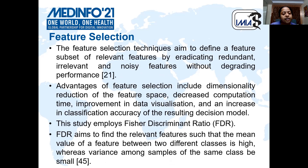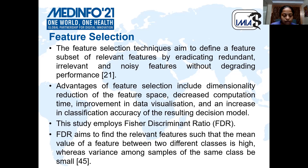After carrying out the feature extraction step, we perform the feature selection step in order to remove redundant or irrelevant features without degrading the performance. In this model, we have used the Fisher Discriminant Ratio as the feature selector. It aims to find relevant features so that the mean value of the feature between the two different classes is high, whereas the variance among samples of the same class is small.